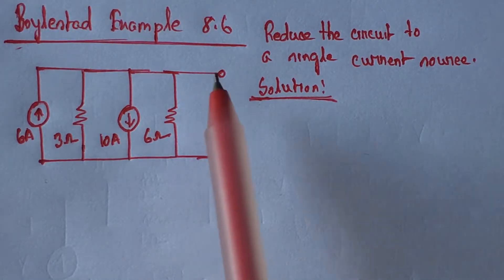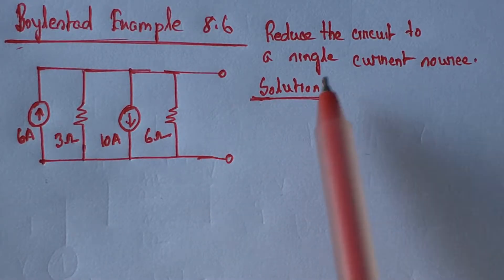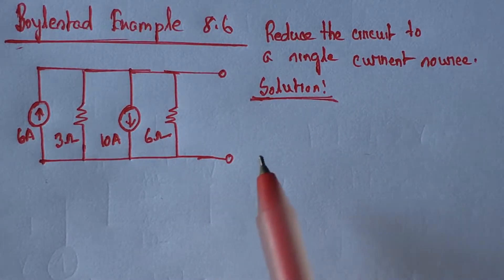Hi viewers. Today we'll solve Example 8.6 from Boylestad. This is a multi-current source problem. Here we have to reduce the circuit into a single current source.